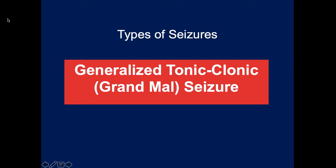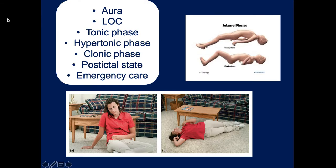The generalized tonic-clonic grand mal seizure is the most common type. Not everyone goes through all phases, but initially when a seizure is about to come on, the body tries to warn the person through an aura. An aura can be a sensation of a bad taste in the mouth or a funny smell. One patient told me that when she feels fear or danger, she knows a seizure is coming. This gives them about 20 to 30 seconds to sit on the floor, lay down in bed, or pull the car over to safety.